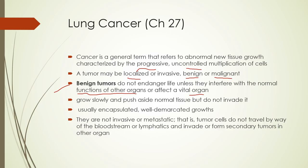Benign tumors are not invasive, not metastatic — they just stay there. Tumor cells do not travel through the bloodstream or lymph tissue like malignant ones do. That's one of the reasons for endobronchial ultrasound, where we sample the lymph tissue surrounding the lungs to see if anything in there is cancerous.